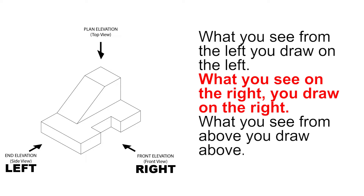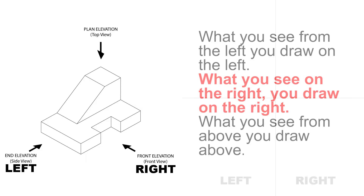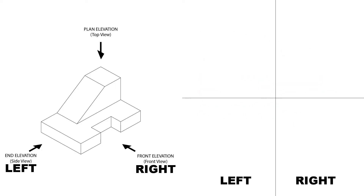Let's apply the third angle principle: what you see on the right, you draw on the right. The front view is on the right, therefore we will draw it on the right. Now you must be wondering why I am drawing the front view at the bottom. Well, in third angle projection, the front view is always below the plan view.